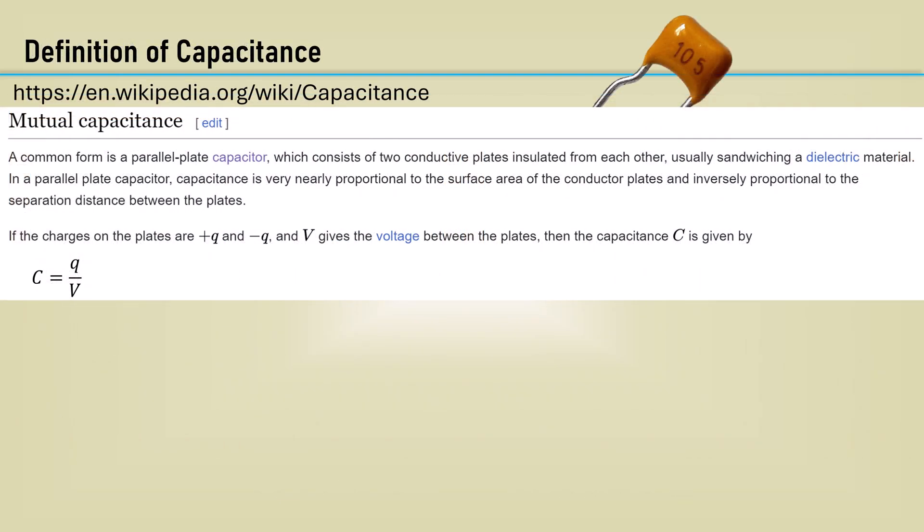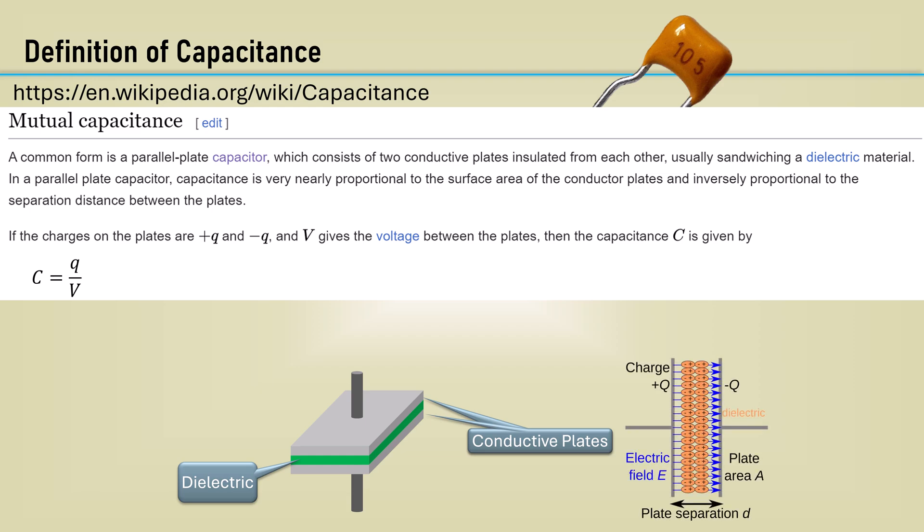Here's the Wikipedia page for capacitors. A capacitor is simply a dielectric sandwiched between two conductive plates. The plates will have a specific area and separation between the plates. The charge on the plates will create an electric field.